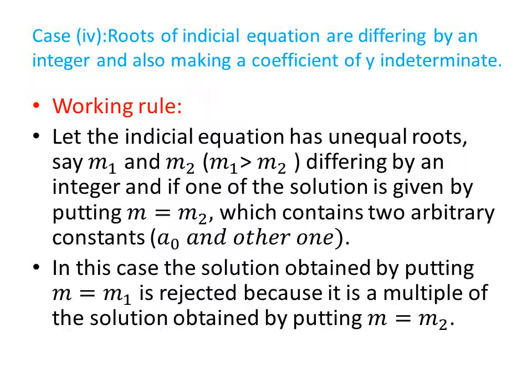First of all, we discuss the working rule. Suppose the indicial equation has two unequal roots m1 and m2 where m1 is greater than m2. These are differing by an integer and when we put m equal to m2, we get one solution. In this solution, two arbitrary constants will be present: a naught and another one.